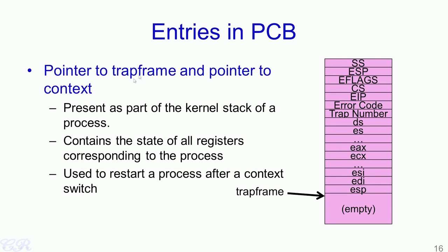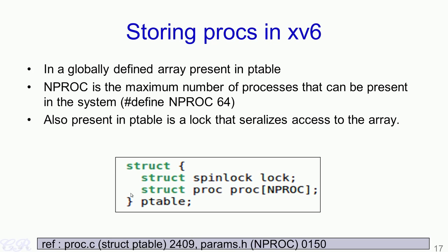Another entry in the PCB are pointers to what is known as the trap frame and context. These trap frame and context are part of the kernel stack and have a lot of information about the current state of the running process. For instance, it would save the stack segment, the stack pointer, the flags register, the code segment, instruction pointer and so on. This particular trap frame and context is used when a process is restarted after a context switch.